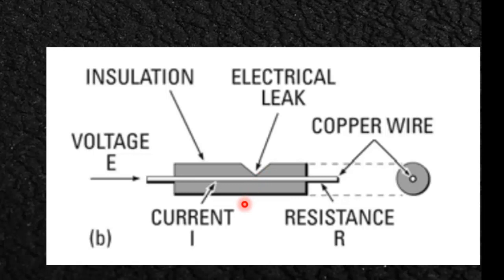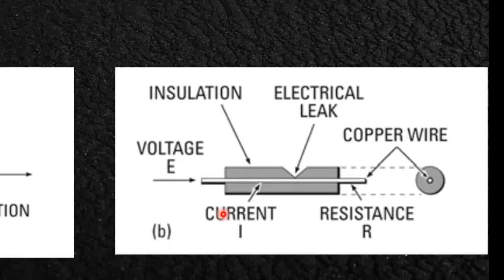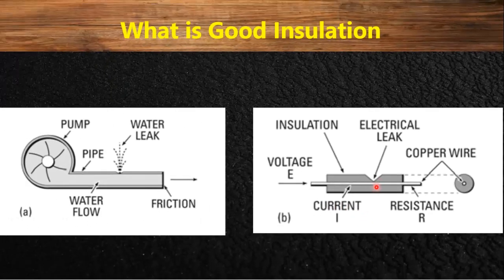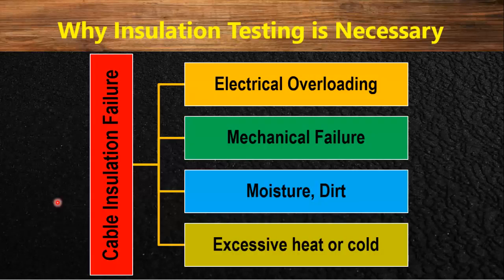It is important to note that no insulation in the world is perfect — no insulation has infinite resistance to current. So some electricity does flow through the insulation and through the ground, and this leakage current is the basis of the insulation tester. In summary, good insulation essentially means a relatively high resistance to the flow of current through the insulation.